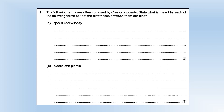In this video we're going to look at the January 2006 unified physics paper from OCR. Let's start with question one. The following terms are often confused by physics students — state what is meant by each of the following terms so the differences between them are clear.